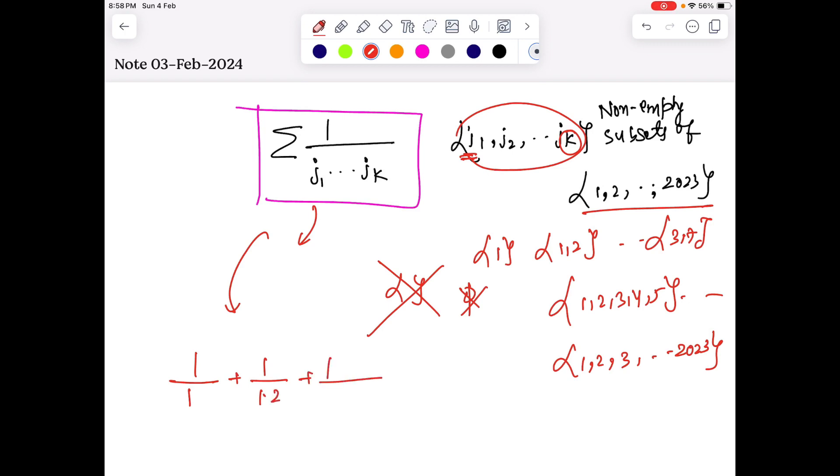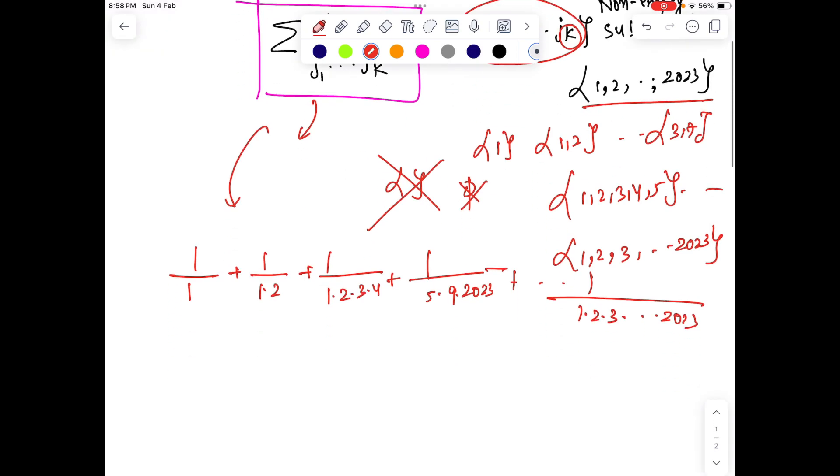So let's understand what exactly this problem is. We need to add 1/1 plus maybe 1/(1·2) plus 1/(1·2·3·4) plus maybe 5·9·2023 and so on. So forth, 1 by all 1 to 2023. So how to decode this sum?